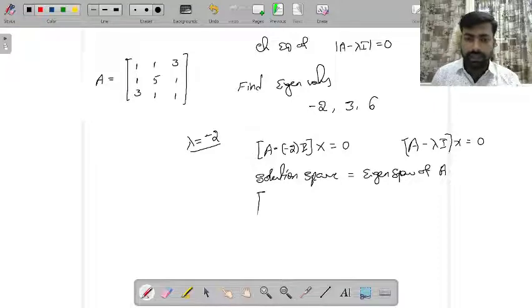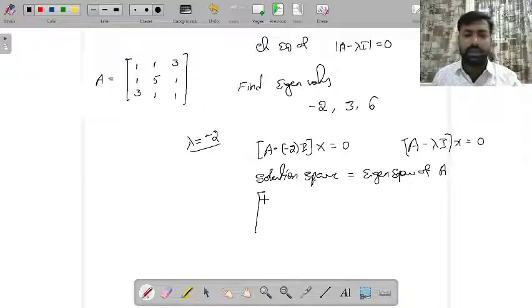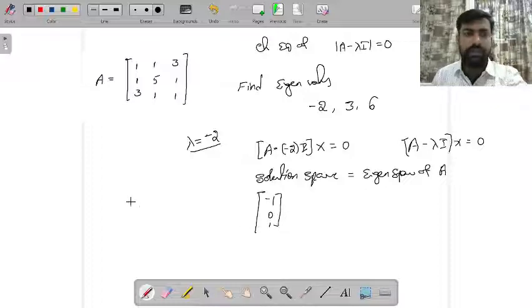So for this, you can see the eigenvector is nothing but negative 1, 0, 1. I have already solved it.